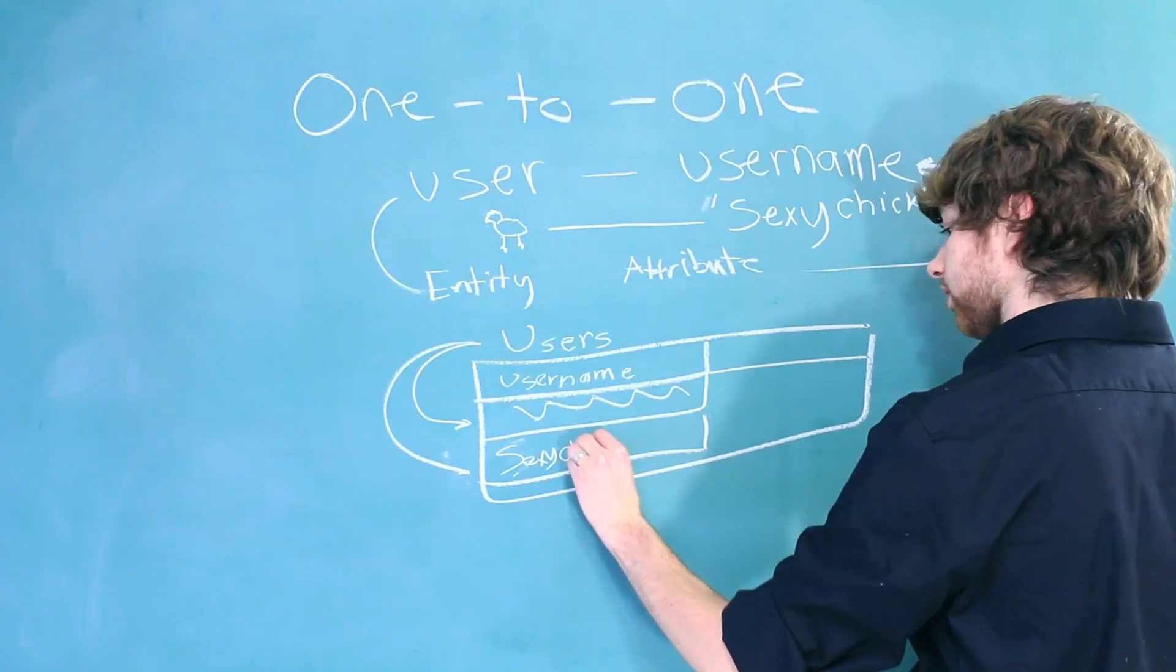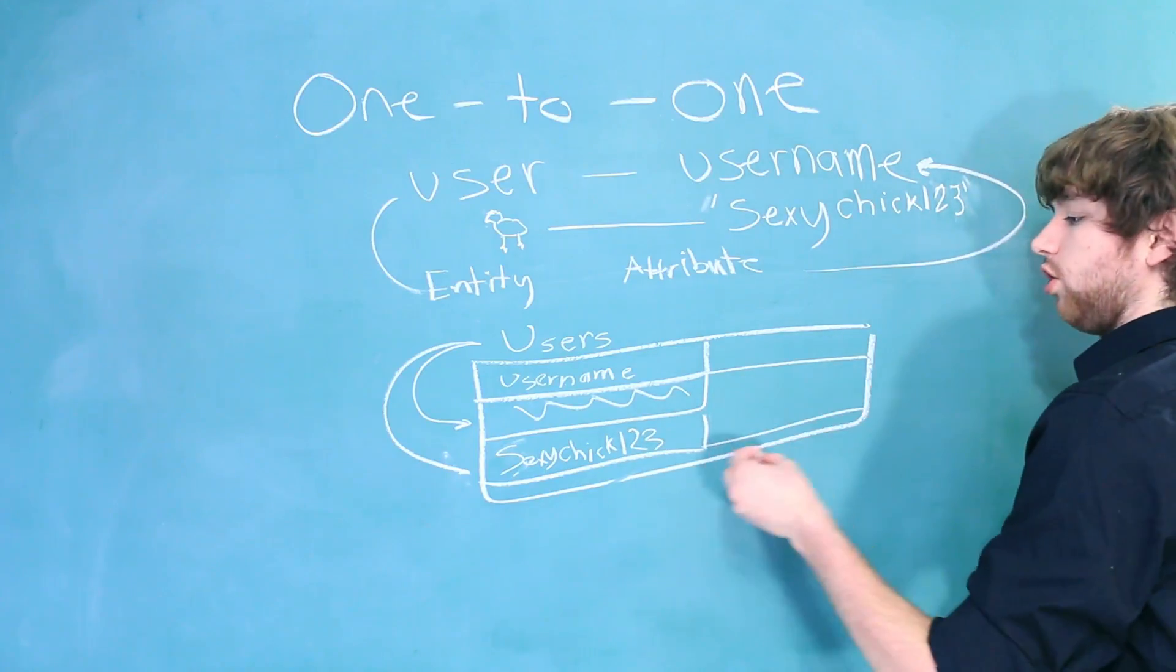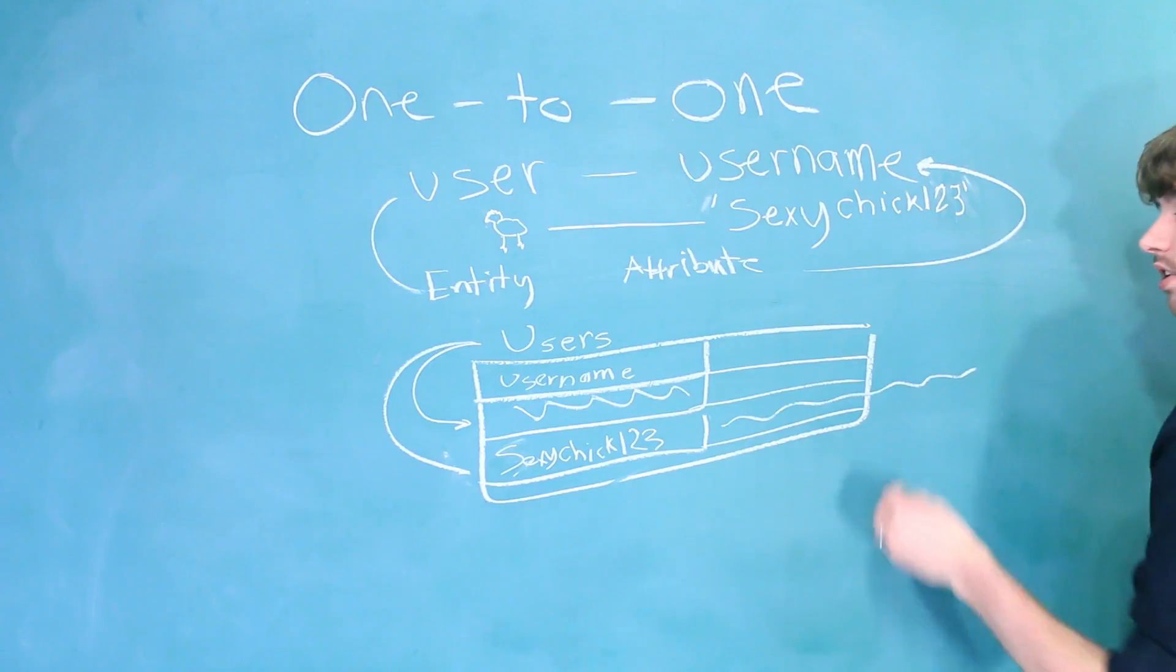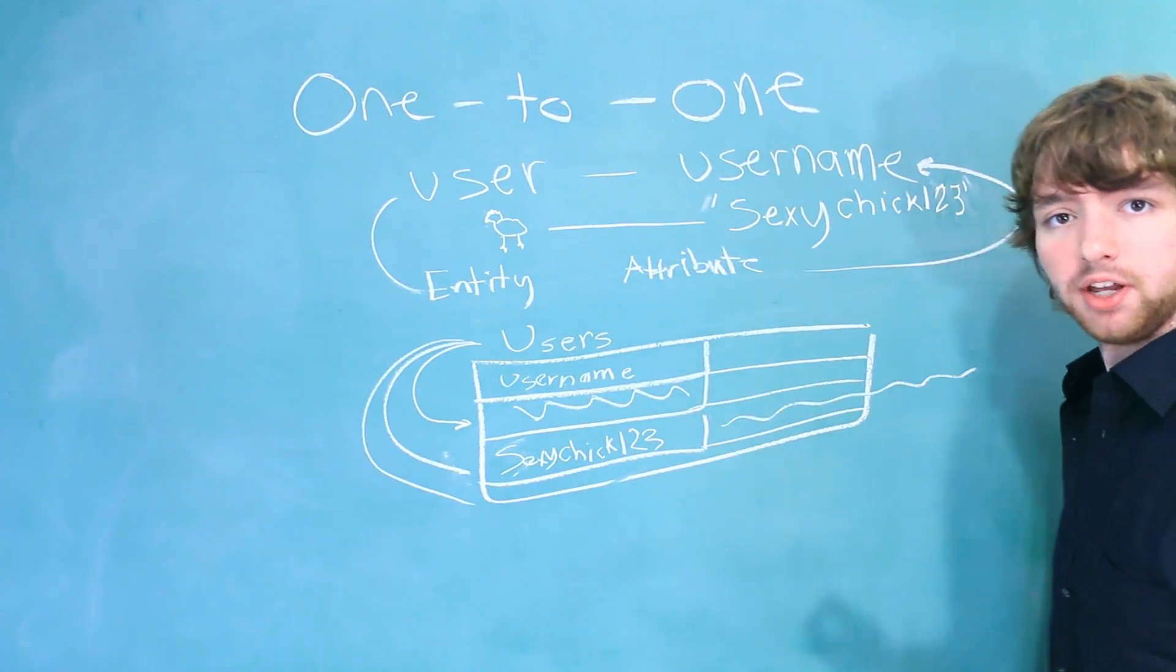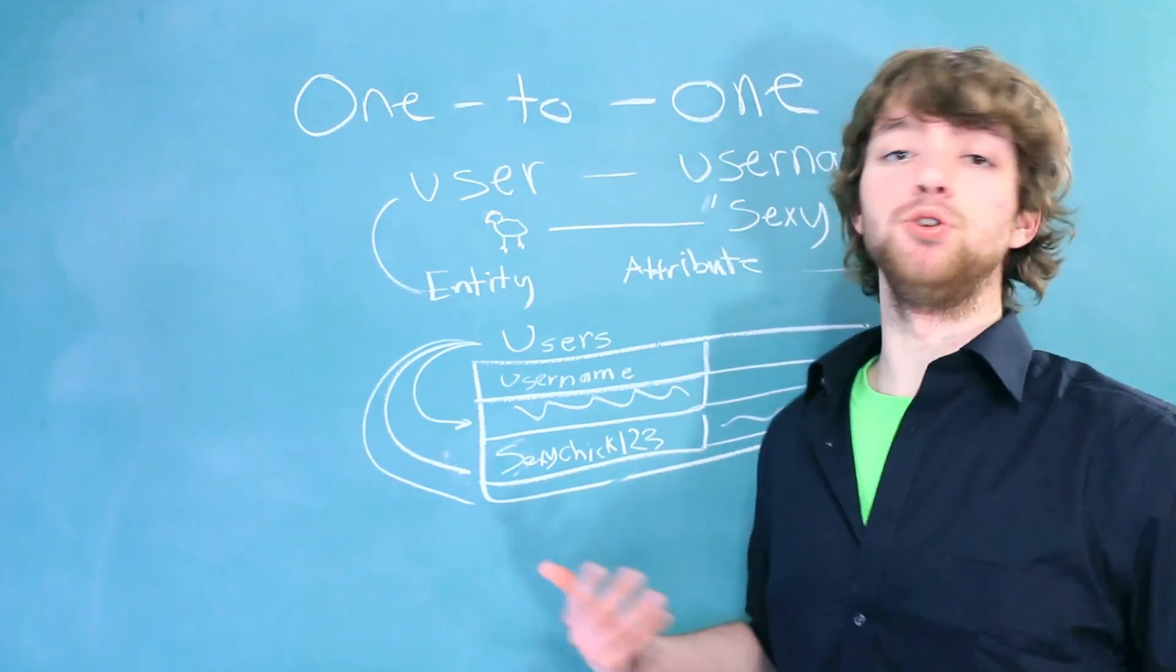So, for this situation, we would have sexychick123, and then all the other data about sexychick123 can go over here, and a new user would be a new row with only one username.